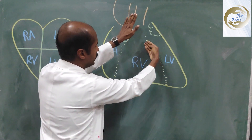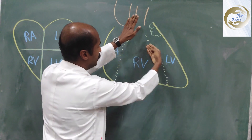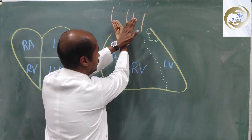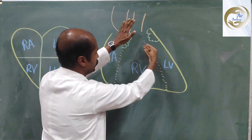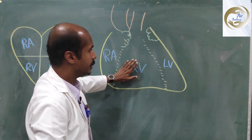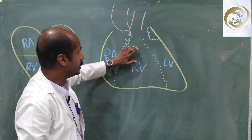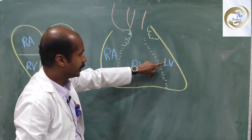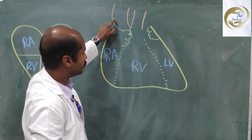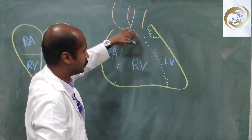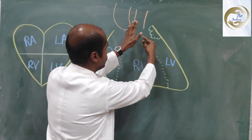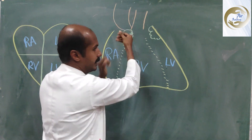The left ventricle pumps blood through a stream that runs behind the right ventricle stream and goes towards the aorta. So you can see the continuation of the right ventricle towards the pulmonary trunk, but not the continuation of the left ventricle towards the aorta — you have to understand that there is a spatial element involved.